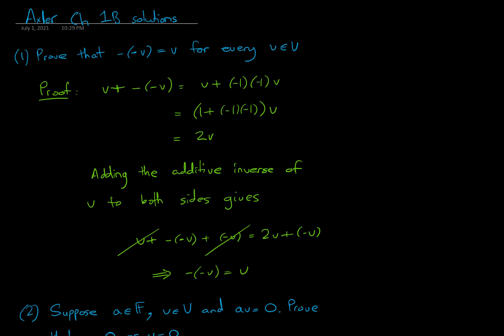Prove that -(-v) = v for every vector v in a vector space. The first way I did this is to say that v + (-(-v)) = v + (−1)(−1)v, and I pulled out both of the minus ones.